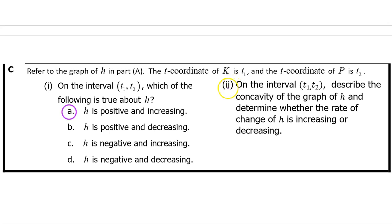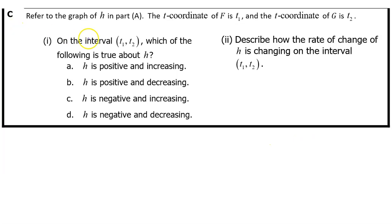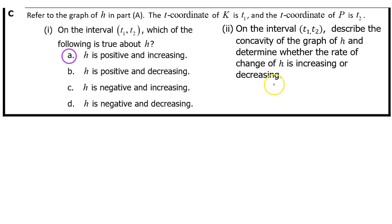C Part 2. On the interval from t₁ to t₂, describe the concavity of the graph of h and determine whether the rate of change of h is increasing or decreasing. Caution! The wording of C Part 2 has changed. In 2024, when they first administered the exam, the wording was like this, and you were allowed to answer with a single word. Now the question is more detailed, and we will have to answer with a sentence.